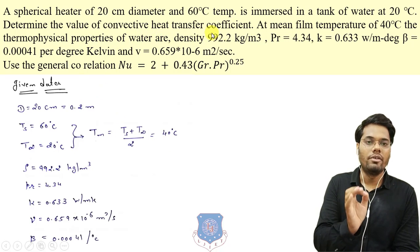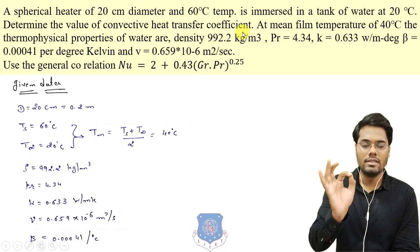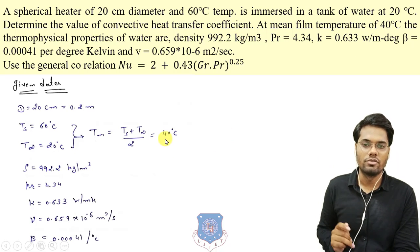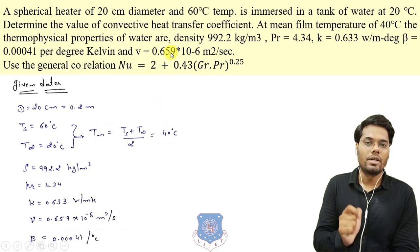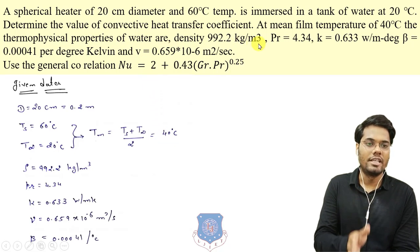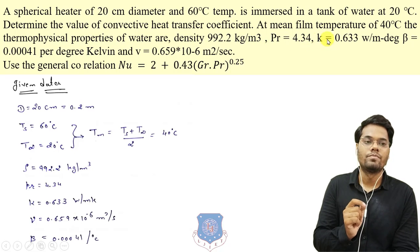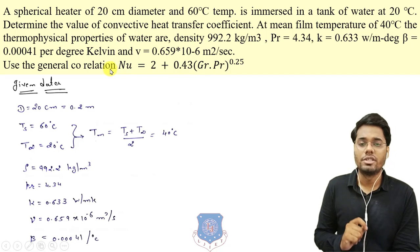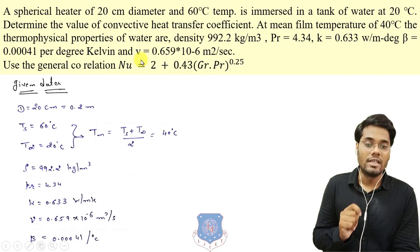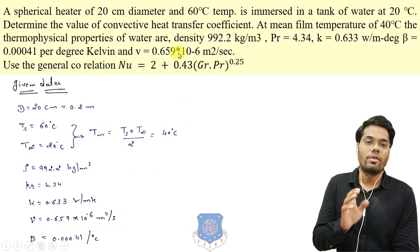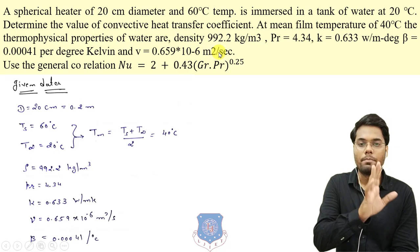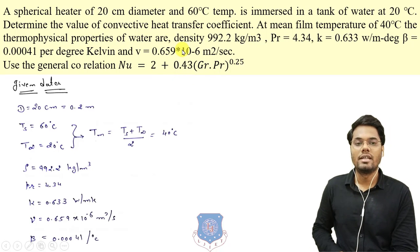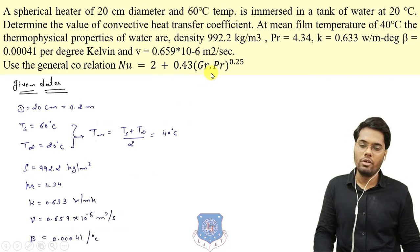We need to determine the convective heat transfer coefficient H. The mean film temperature is 40°C. At this temperature the thermophysical properties of water are given: density, Prandtl number, conductivity, beta (already given in the question), and kinematic viscosity of 0.659 × 10⁻⁶ m²/s. The correlation between Nusselt, Grashoff, and Prandtl is also given in the question.